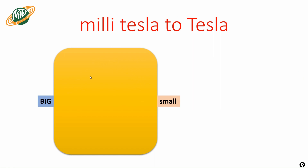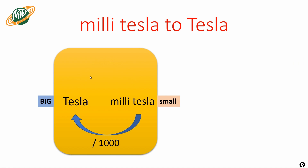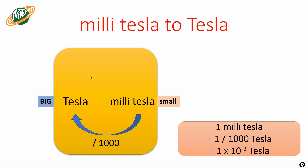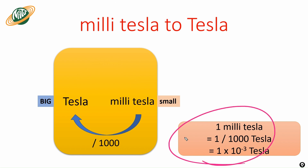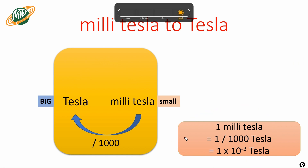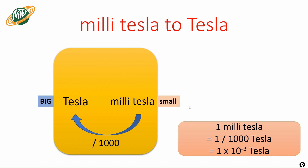How do we convert millitesla to tesla? Millitesla is a smaller unit. When you convert smaller unit to bigger unit, you divide by one thousand. Take a simple example: one millitesla equals one divided by one thousand tesla, which can also be represented as one times ten to the power minus three tesla.